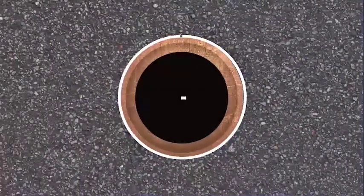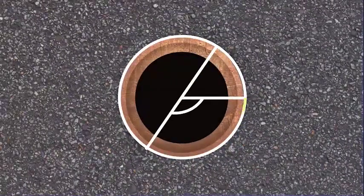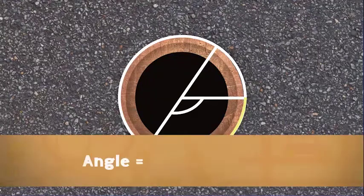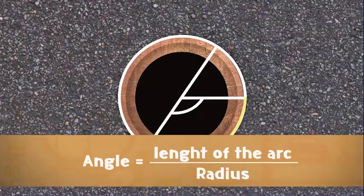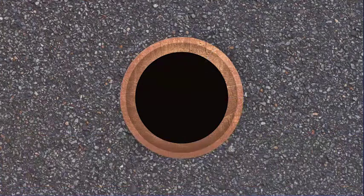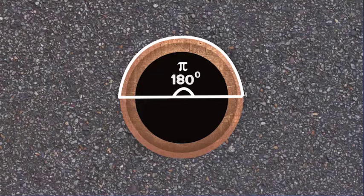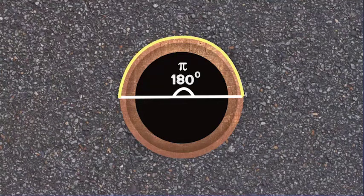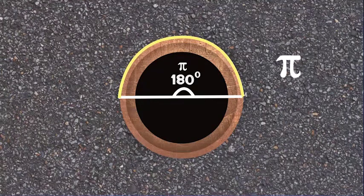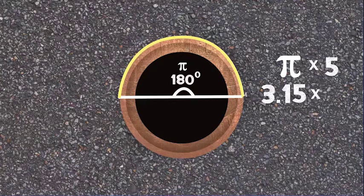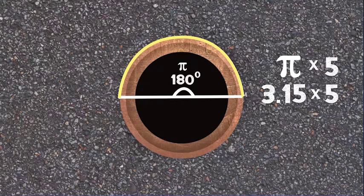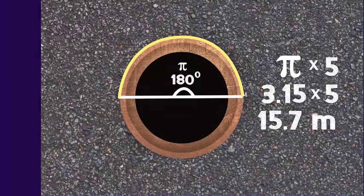Because there is a relation between the angle subtended by an arc of a circle and radius. Angle equals the length of the arc divided by the radius. Now let's take the length of the arc from both ends of the diameter. In such case, the angle subtended will be 180 degrees or pi. So the length of the arc will be equal to pi multiplied by 5, that is 3.14 multiplied by 5, which equals 15.7 meters.